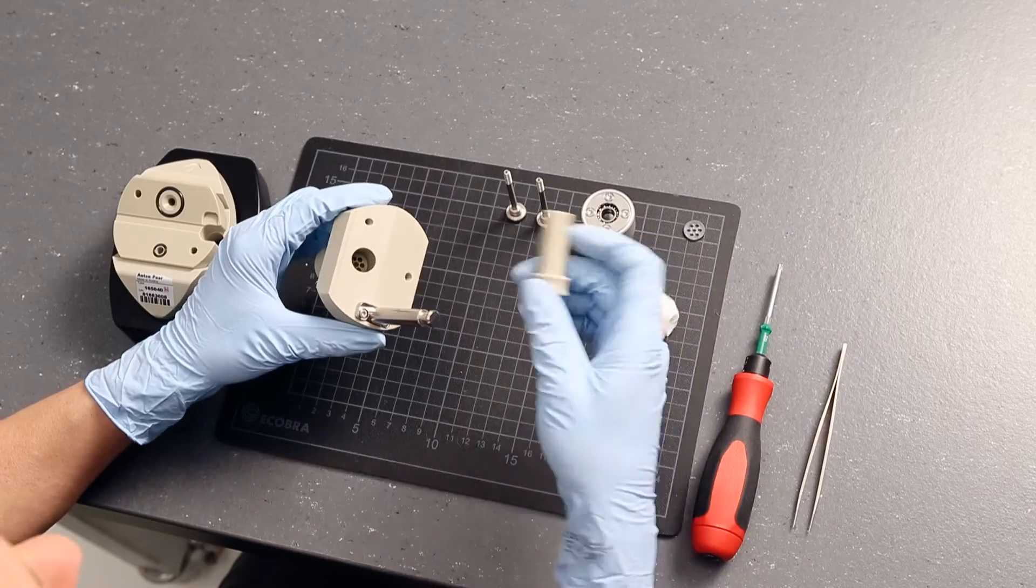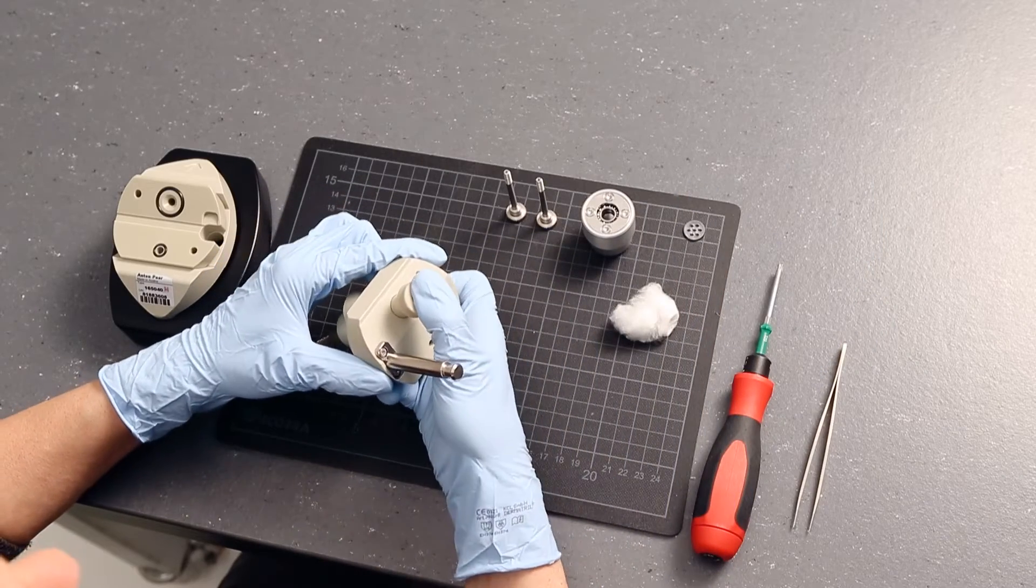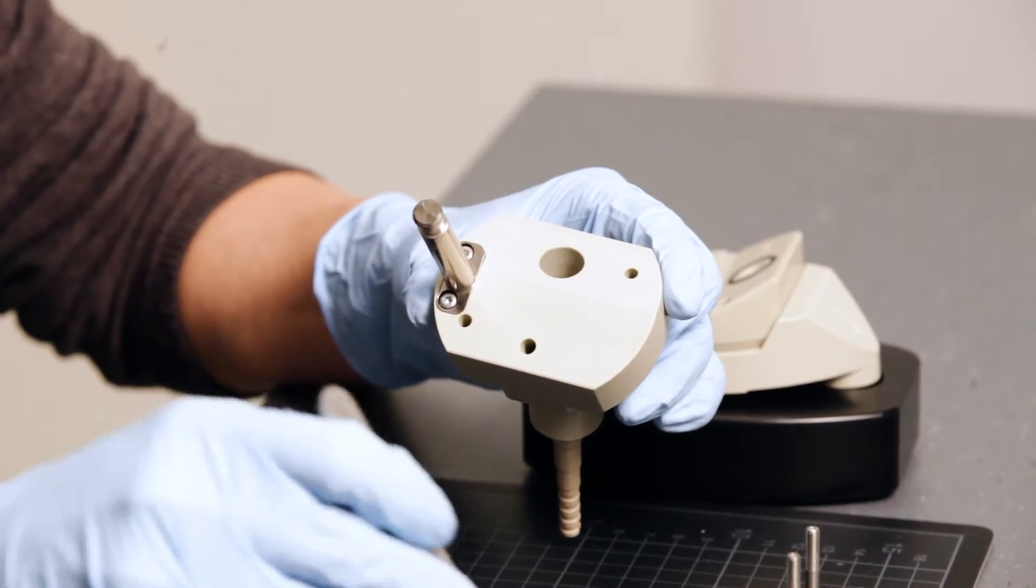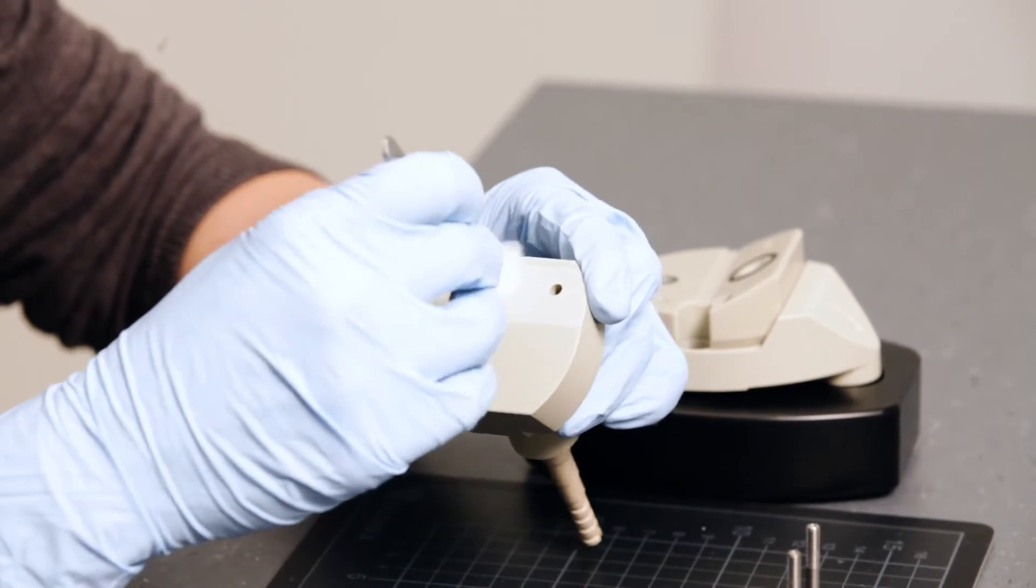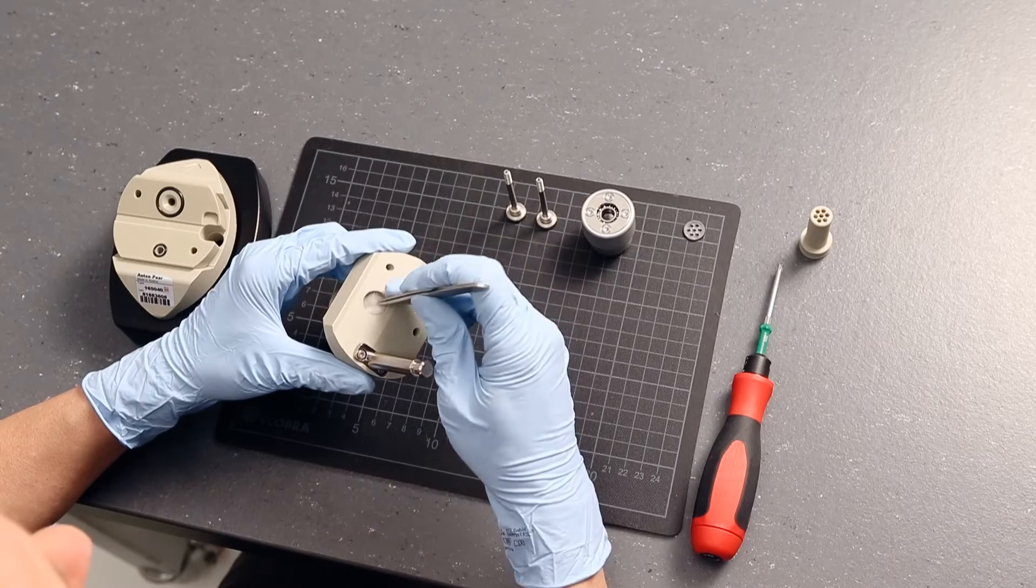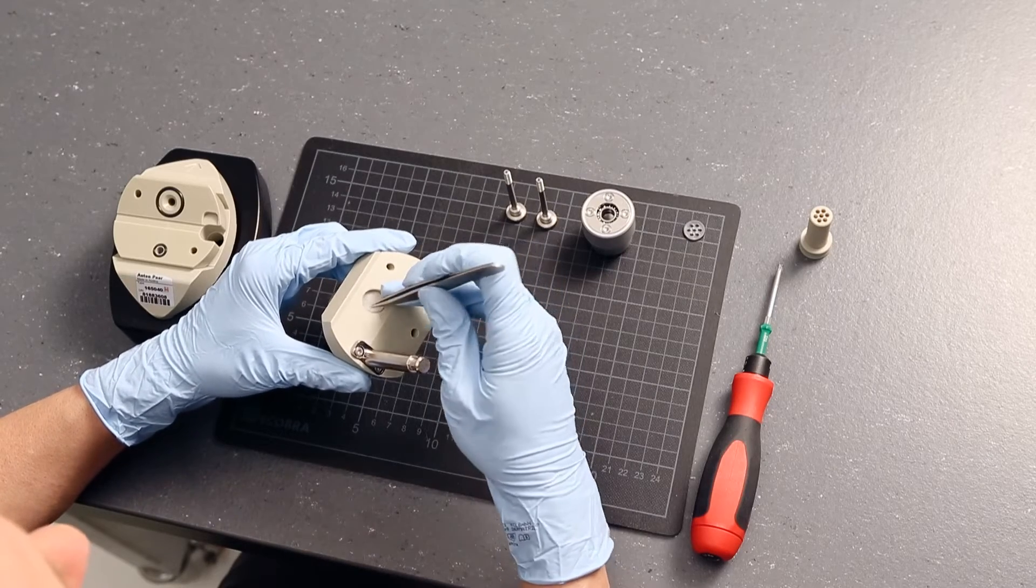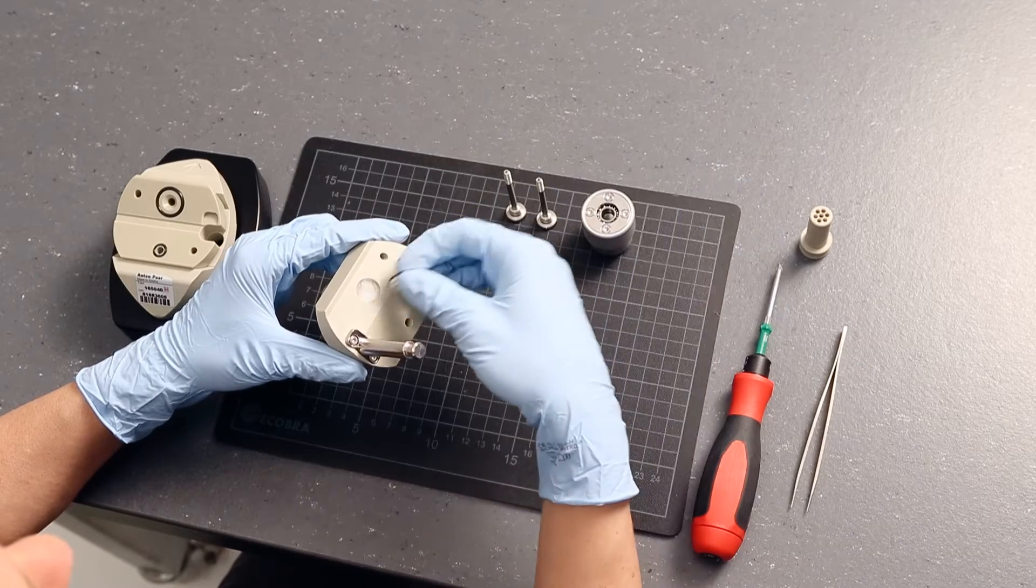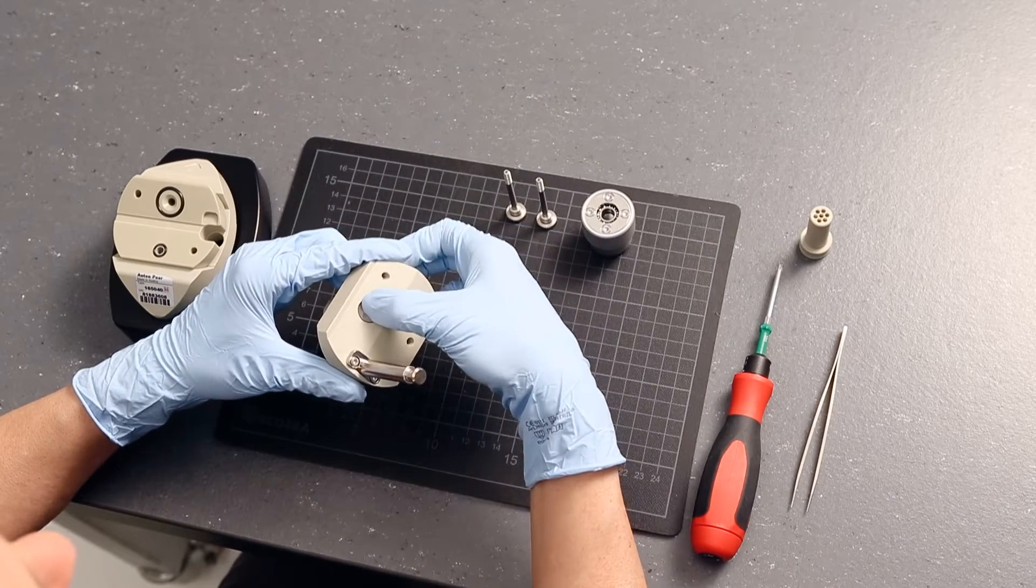Use the mounting rod to push the shaft to the bottom. Insert the fiber sample into the cylindrical cell. Fix the fiber sample in the cylindrical cell by using one of the support discs.